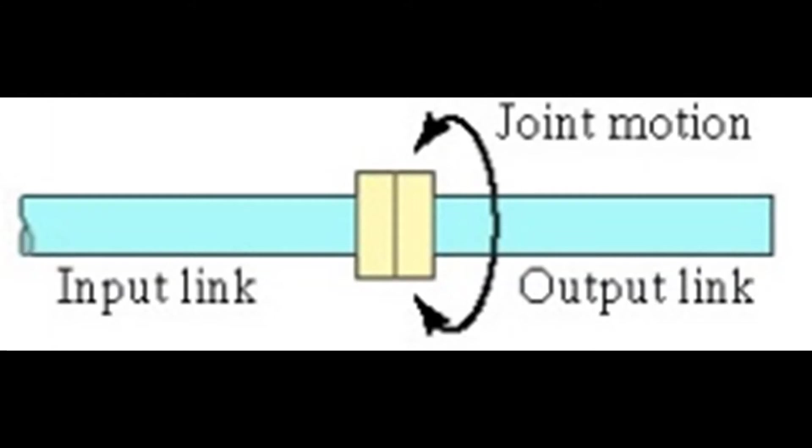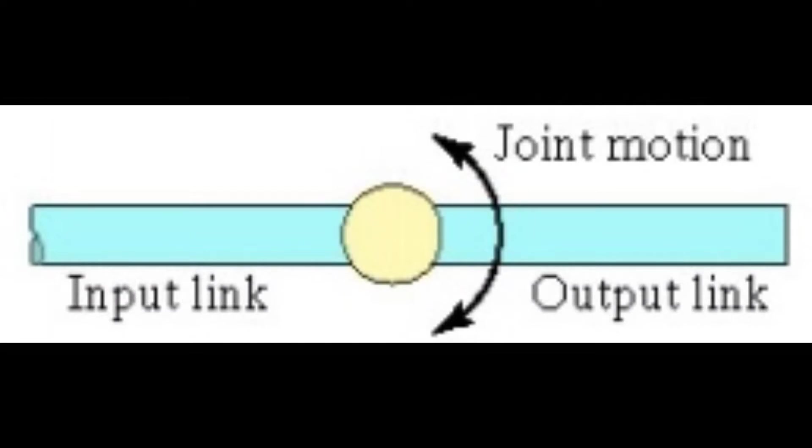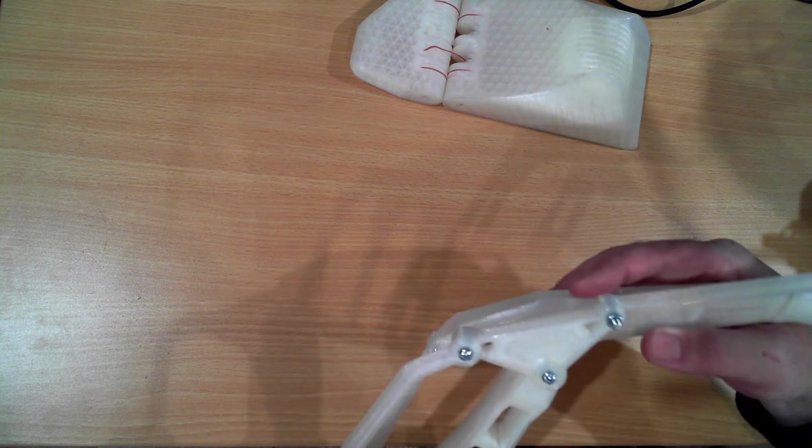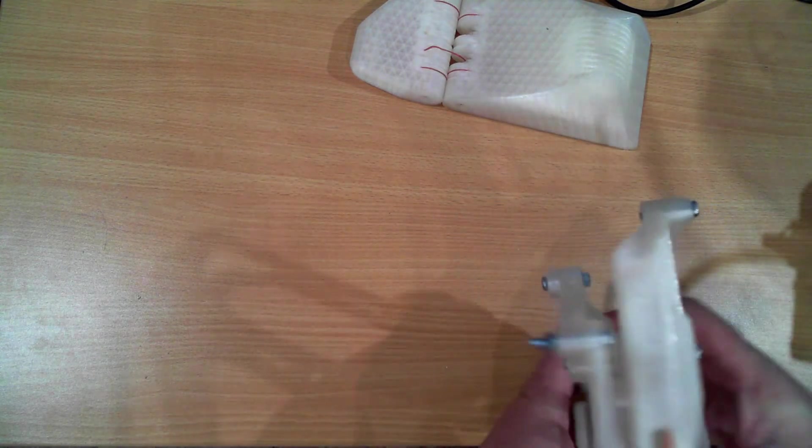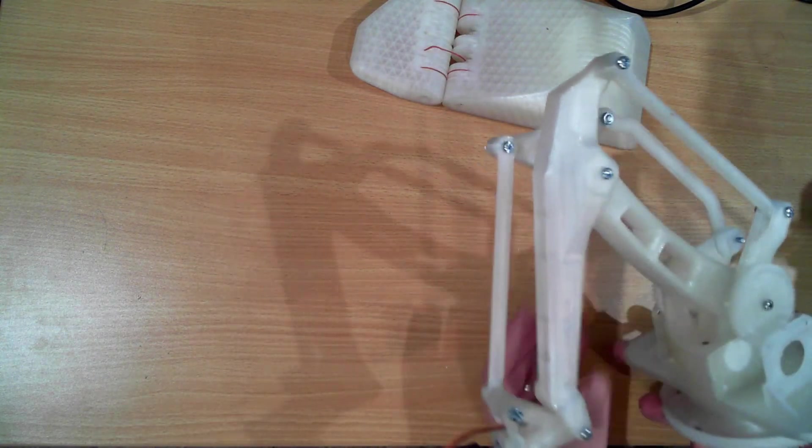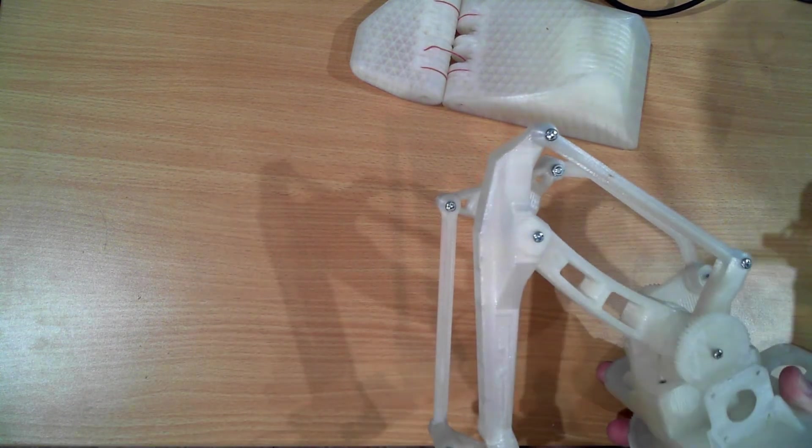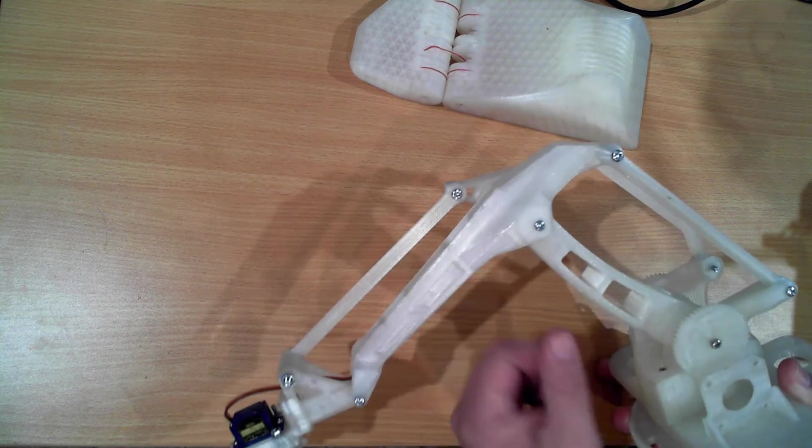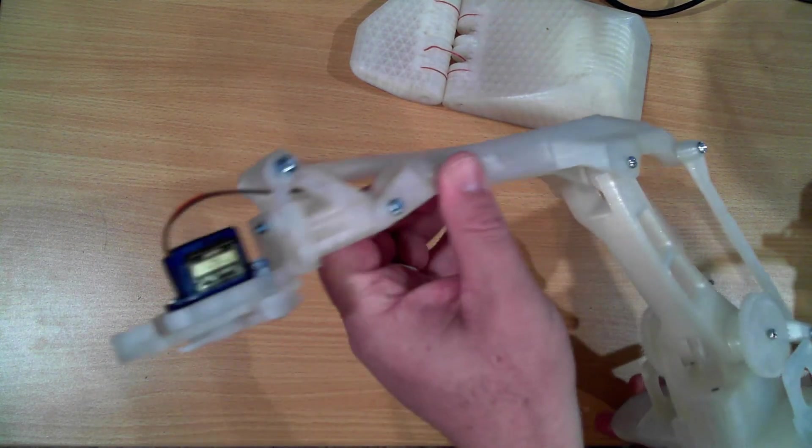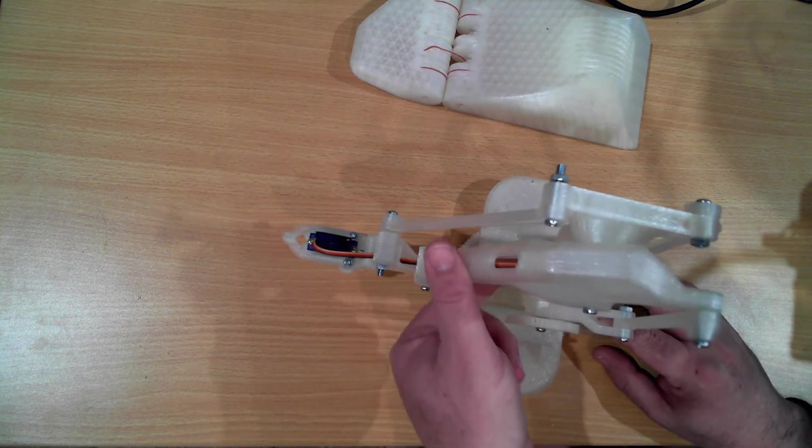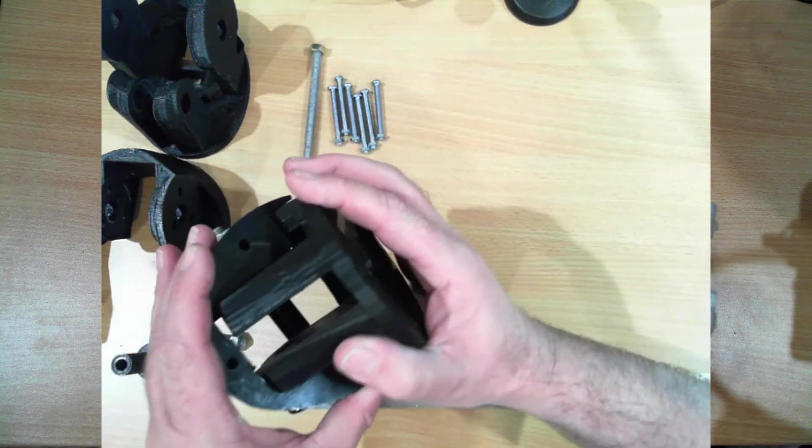Now the last major category of joint we'll be looking at is the rotational joint. So if we look at this arm, this joint here is a rotational type of joint. Maybe if I hold it this way it would be better. The main arm comes out here and then this one will rotate around its axis. This is pretty common and used.